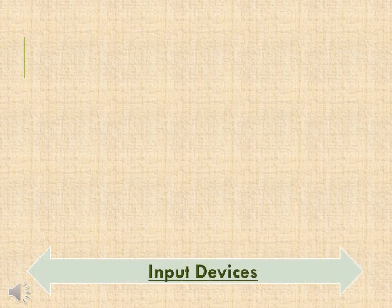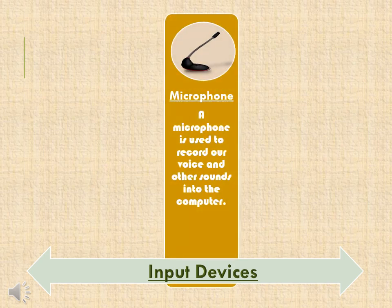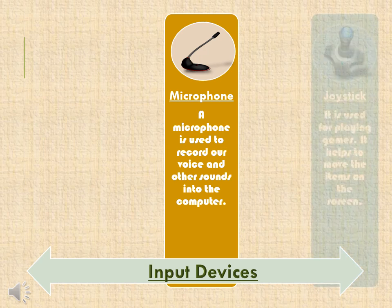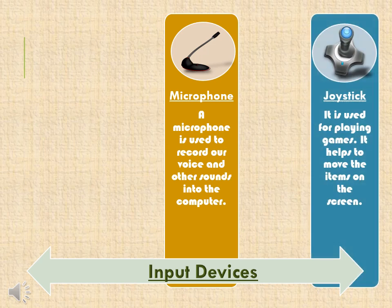Functions of some of the input devices: Number 1, Microphone — a microphone is used to record a voice and other sounds into the computer. Number 2, Joystick — it is used for playing games and helps to move the items on the screen.